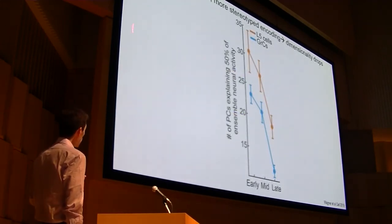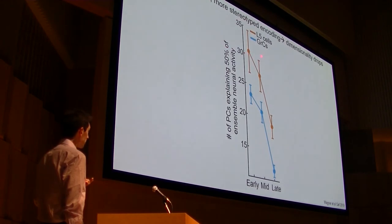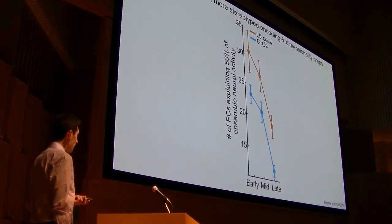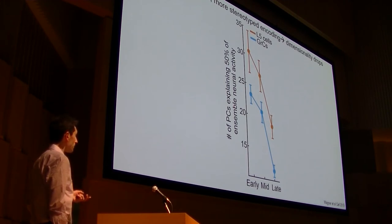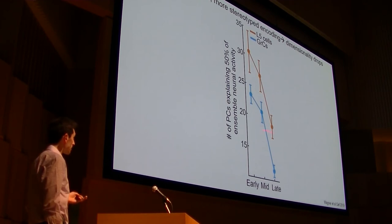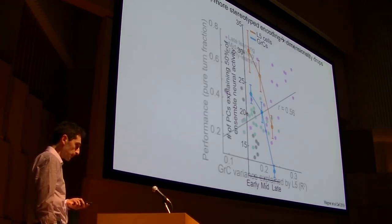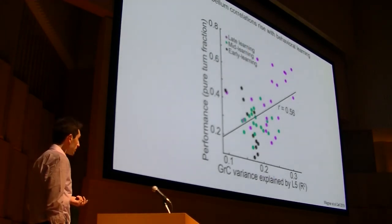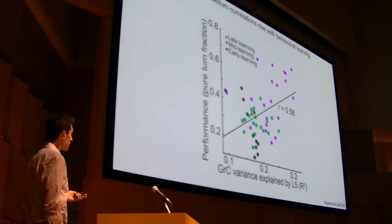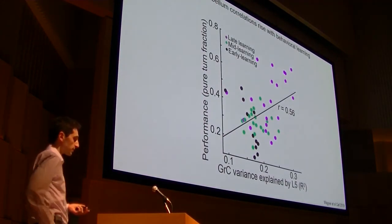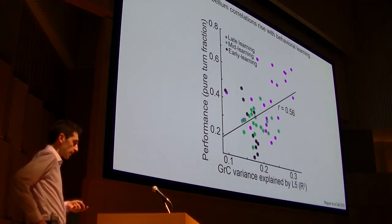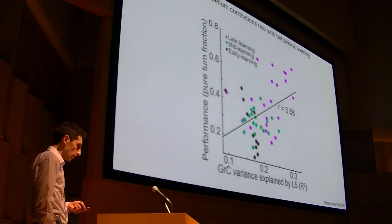So as you might have guessed, if the correlations are going up, and more neurons are encoding the task, the dimensionality of these responses is probably dropping. So when you count up the number of PCs that are required to explain half of the activity, either in the granule cells or premotor layer five neurons, you find that they take a pretty big hit over the course of learning. And we show that these correlations among neurons are rising basically at the same time that the mouse's behavioral performance is improving over these weeks-long time scales.